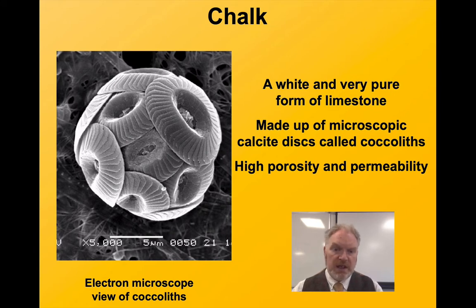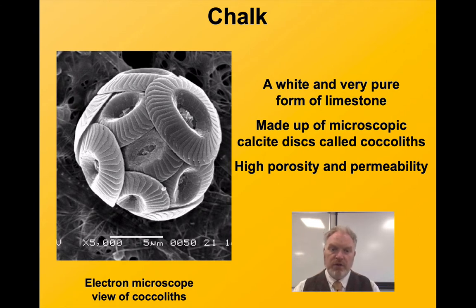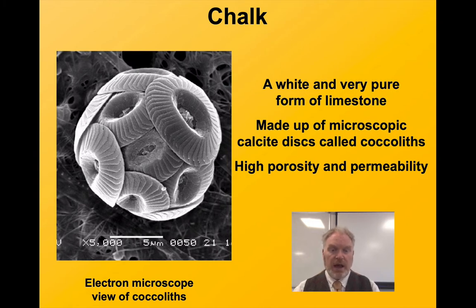This particular scanning electron microscope view shows us the scale. That scale bar at the bottom is only five microns across — five millionths of a metre. They're incredibly small organisms. You're not going to see them even using a hand lens or even a microscope.